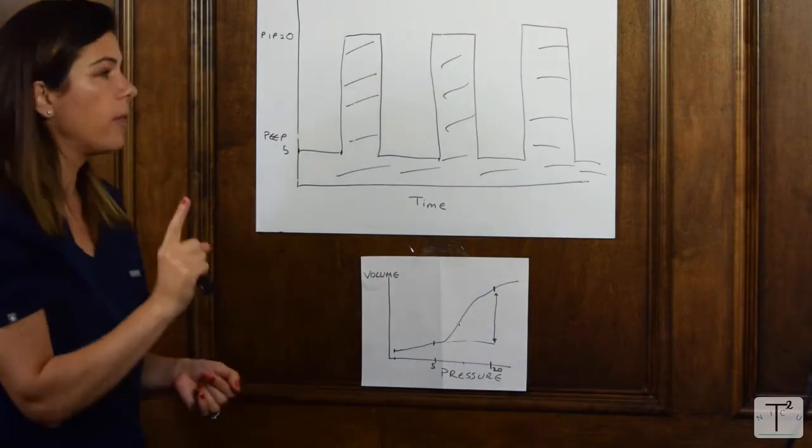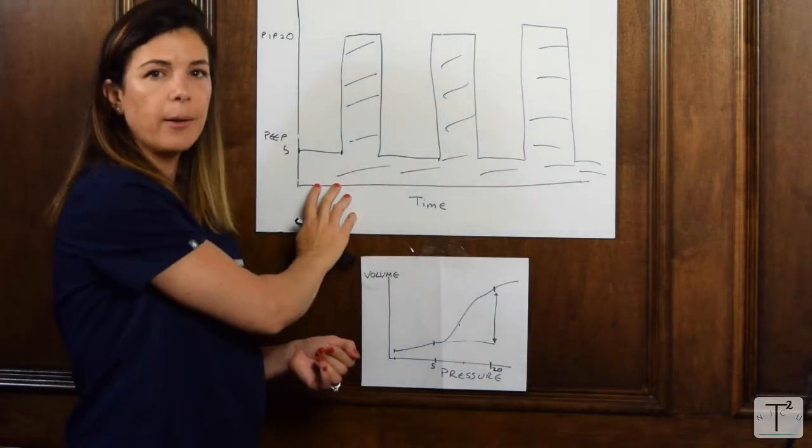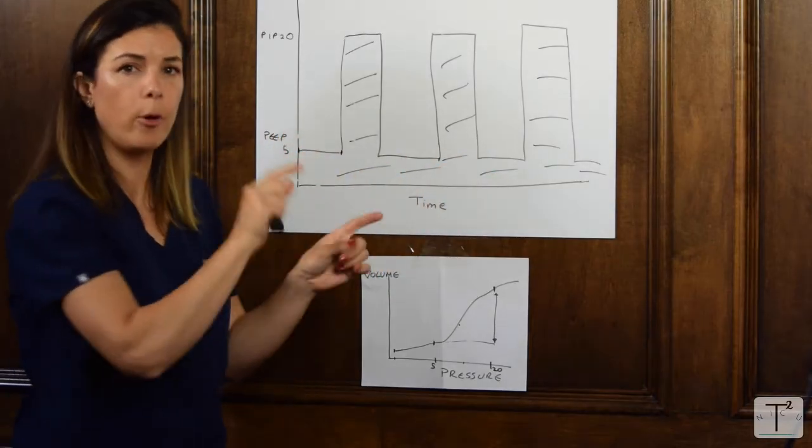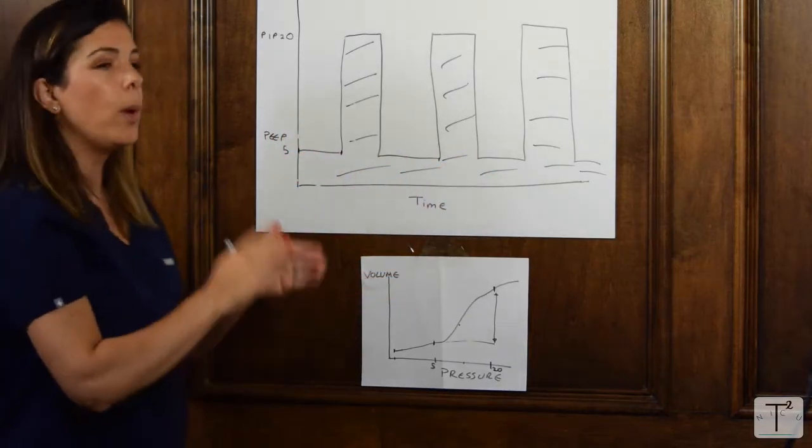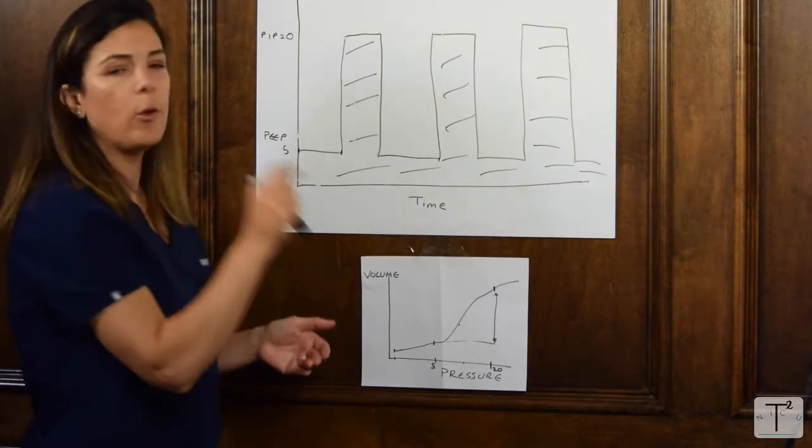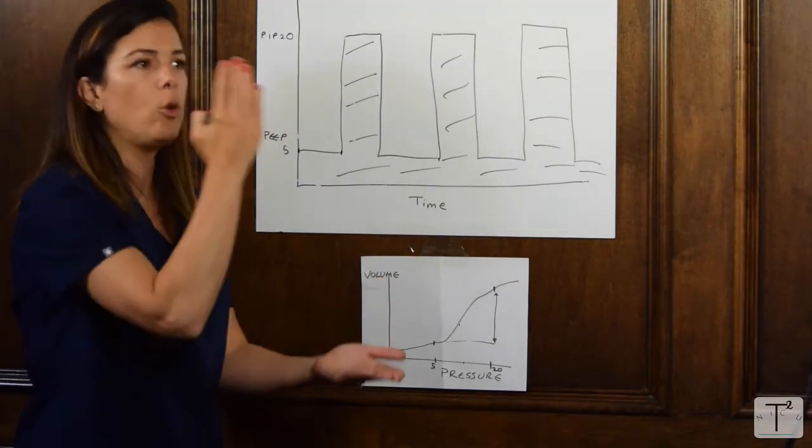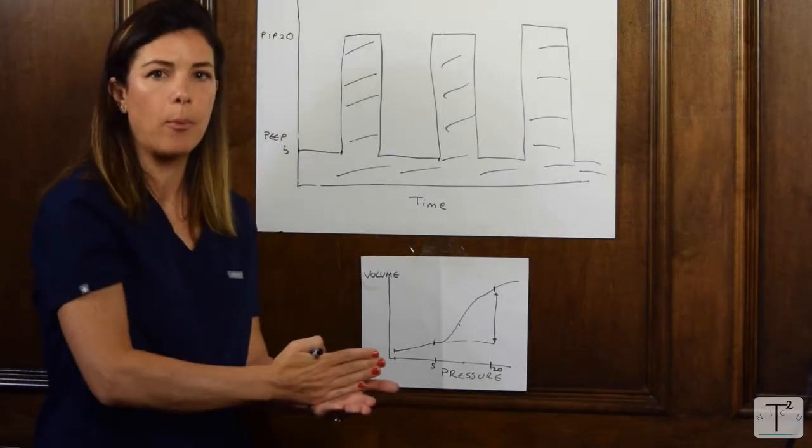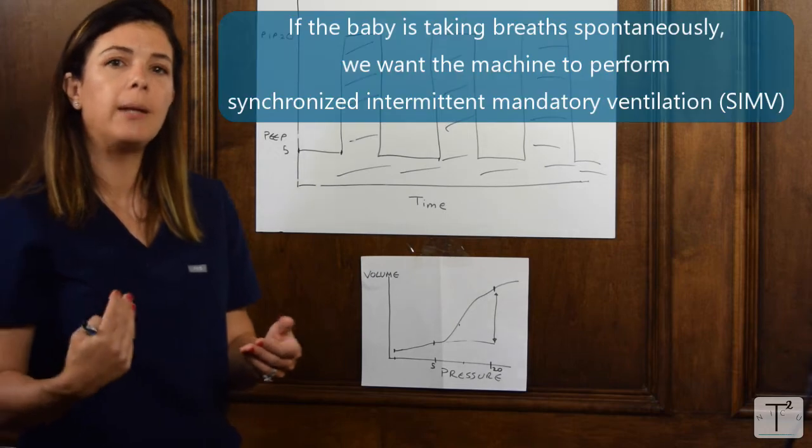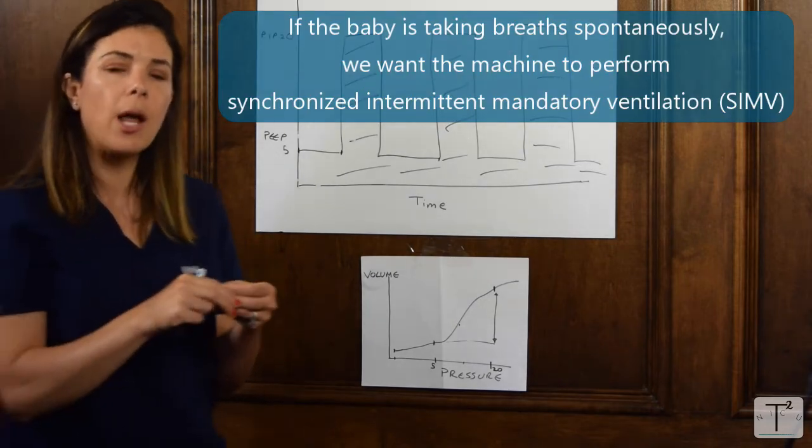There's just one more thing that I want to mention with the ventilator. For the purposes of this, this is again pressure mode because we're typing in pressures here. We are assuming that the baby is not taking any extra breaths by itself. Here, if you set the rate at 30, every two seconds exactly, the machine will take a breath. Whereas in reality, we want the machine to be synchronized with the patient.